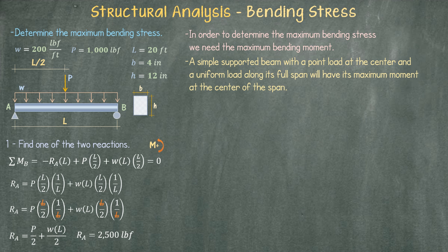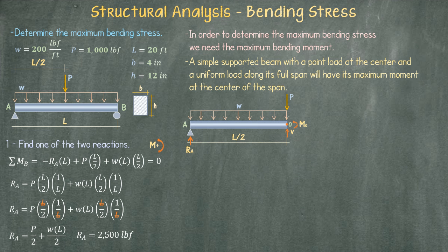Now we are able to find the moment anywhere along the beam. Since we need the moment at the center, we are going to cut through the center of the beam. Our diagram will look like this. We also need to establish our shear and moment conventions. The shear will be positive going up and the moment will be positive when turning counterclockwise.